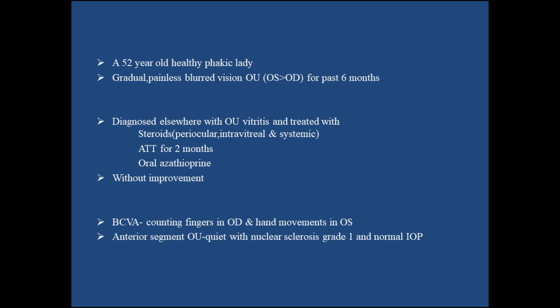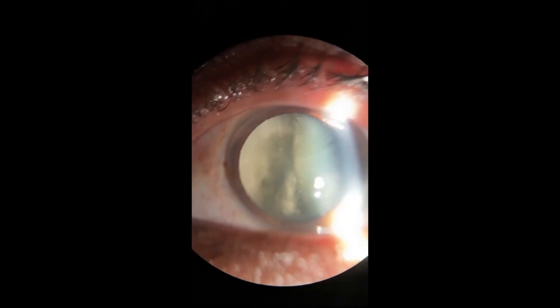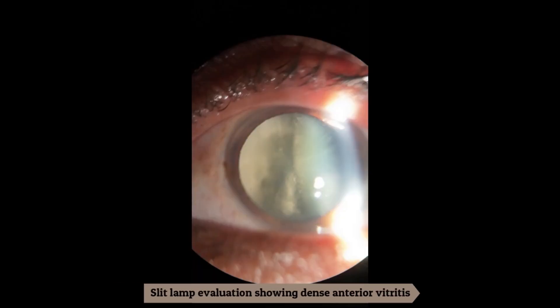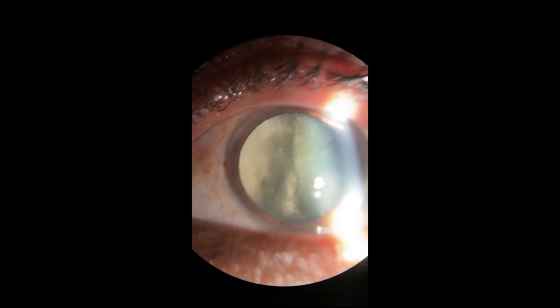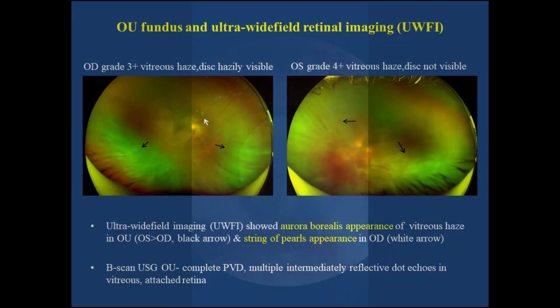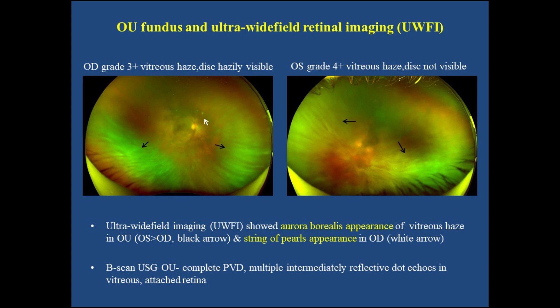BCVA was counting fingers in the right eye and hand movements in the left eye. Anterior segment was unremarkable except early nucleus sclerosis in both eyes. Slit lamp evaluation showed dense anterior vitritis.